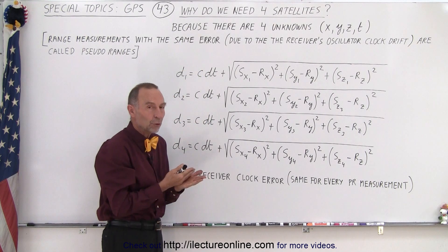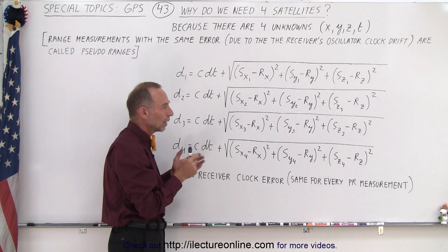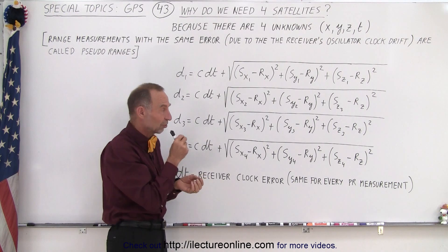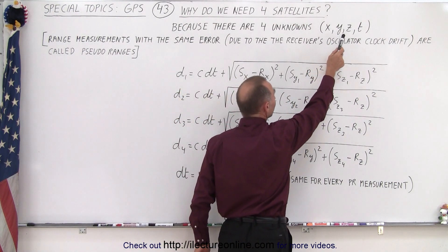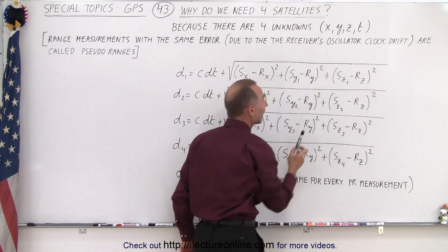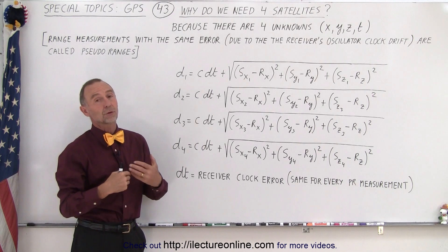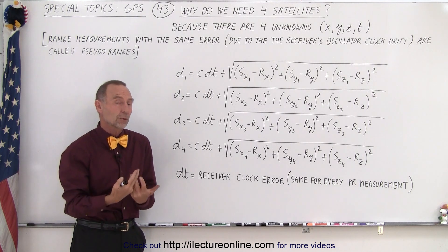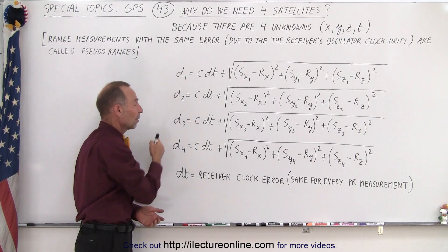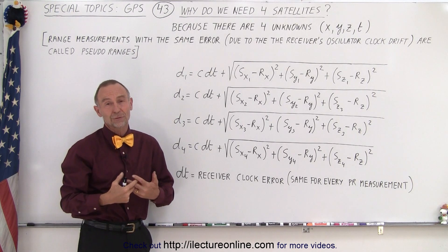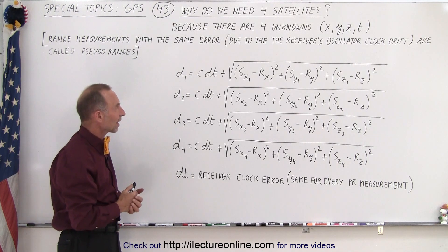You need to know the position of each of the satellites, which means you need to know the X, Y, and Z for every one of the four satellites and the time. So there are essentially four unknowns, and in order to solve four unknowns you need four equations. To come up with four equations — four distance measurements — you're going to need four satellites. So the minimum required to figure out where you are is four satellites.